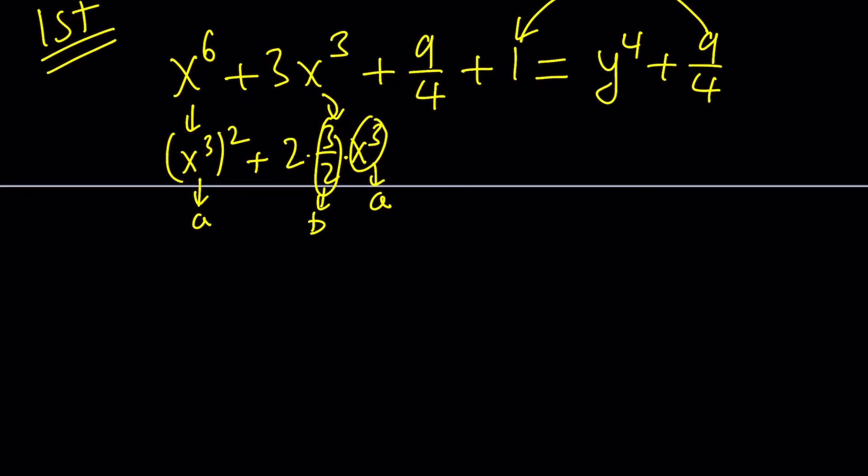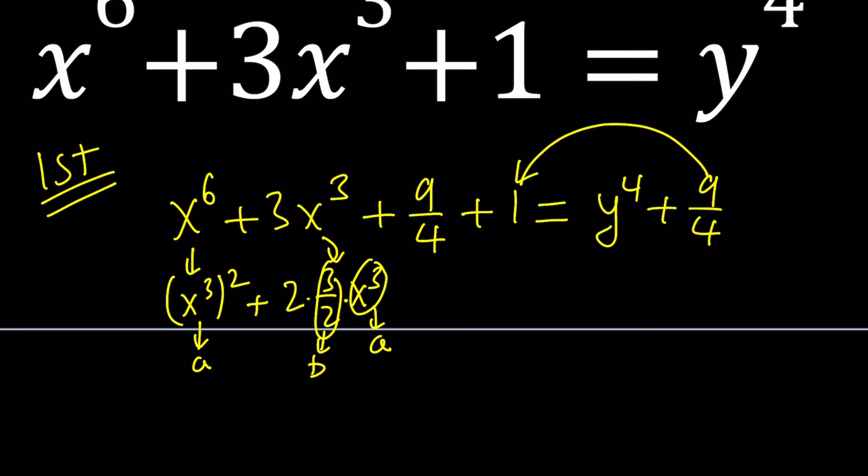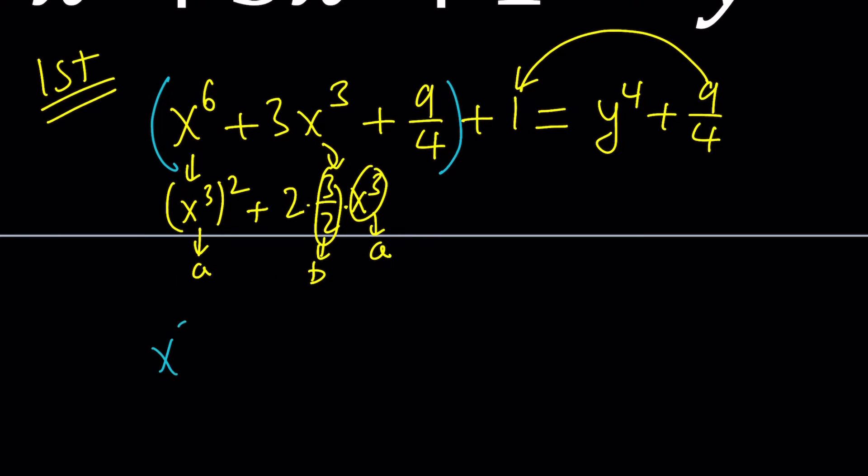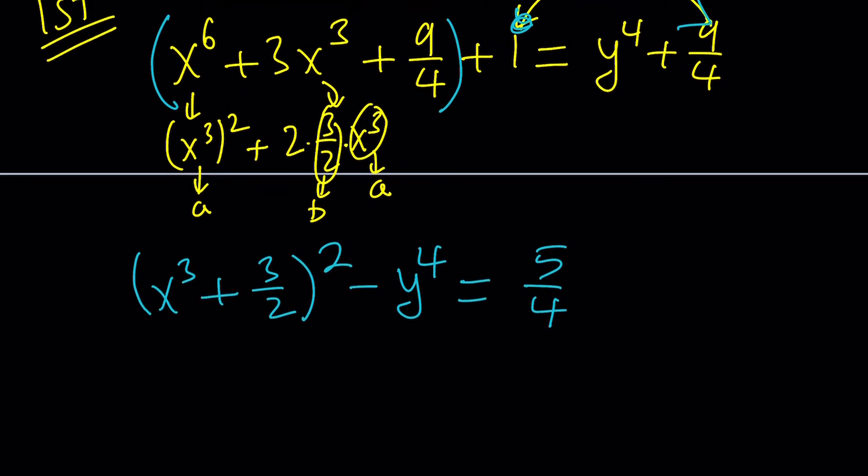So now here's what we got. But first of all, let's go ahead and put these together because that's the perfect square piece. And now I can write this as x to the third plus 3 halves squared. And then what I want to do is bring down the y to the fourth to the left and instead subtract the 1. And 9 fourths minus 1 is going to be 5 fourths.